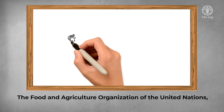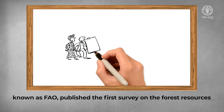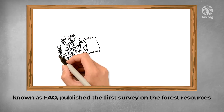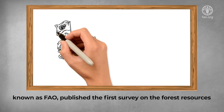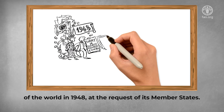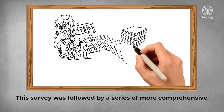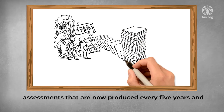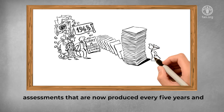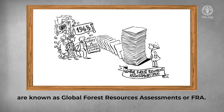The Food and Agriculture Organization of the United Nations, known as FAO, published the first survey on the forest resources of the world in 1948 at the request of its member states. This survey was followed by a series of more comprehensive assessments that are now produced every five years and are known as Global Forest Resources Assessments, or FRA.